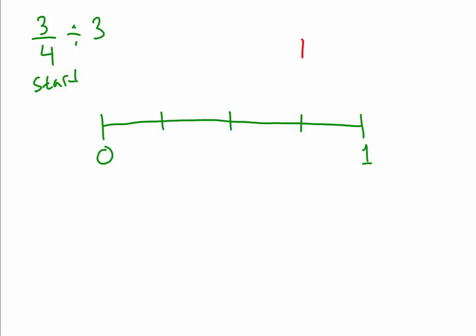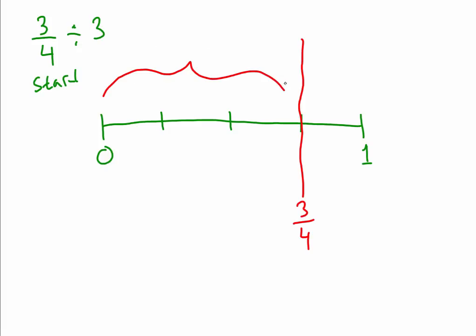Now you've got four equal parts. We have to start with three-fourths, not four-fourths, so we make a cutoff at three-fourths. Starting at zero, go bounce: one-fourth, two-fourths, three-fourths — and mark it off. Put a little squiggly bracket and note that we have to divide this whole space into three parts. Look at the space — do you not see that it's already split into three parts?